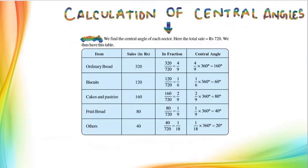This is how we calculate the central angles. Now, ordinary bread was 320 rupees and the total was 720. So the central angle is calculated with the formula: frequency of observation 320 divided by total frequency 720, multiplied by 360. This gives us an angle of 160 degrees.